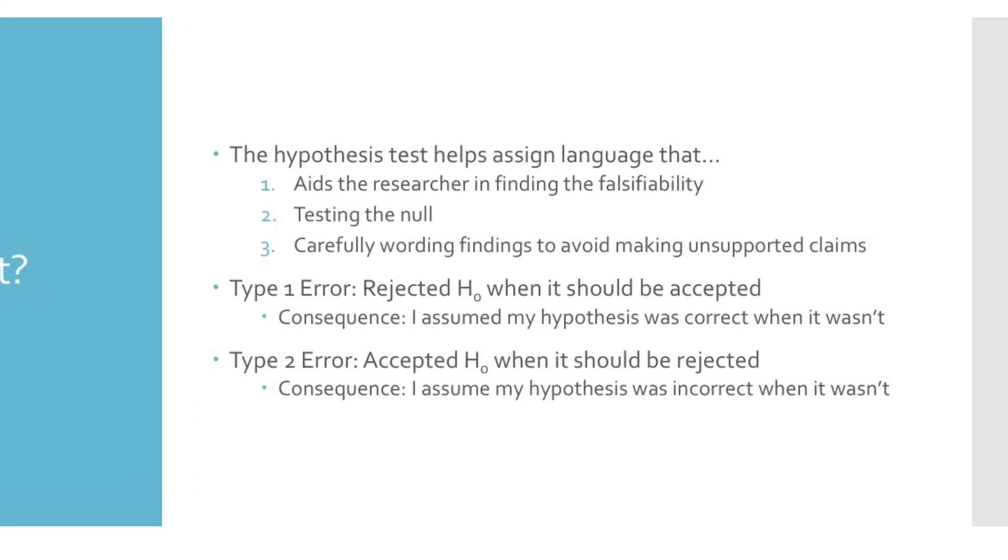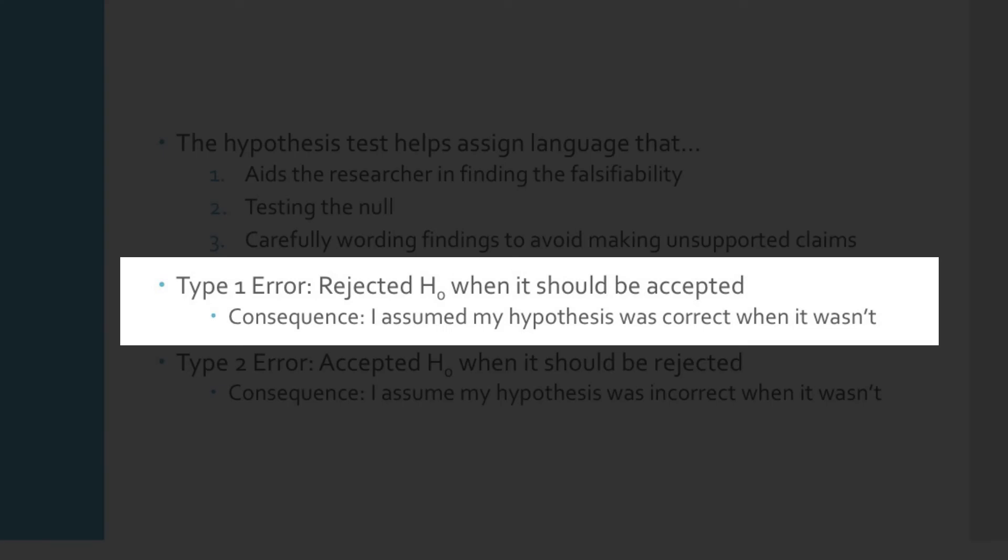If I incorrectly reject the null hypothesis and, in so doing, claim that the hypothesis was supported, that is what we call a Type 1 error. In the case of the swans, I didn't have a large enough sample, or a sample that included swans from Australia. As a result, I rejected the null hypothesis and supported the hypothesis that all swans are white, even though they aren't.